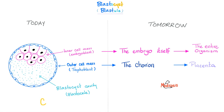In the good old days it was written as 'blastocoel' — with the O and E as one ligature letter, not two separate letters. The inner cell mass is called the embryoblast — meaning growing or immature embryo — and the embryoblast will later give rise to the embryo itself. The outer cell mass is the trophoblast, and the trophoblast will give you the chorion, which will later give you the placenta.